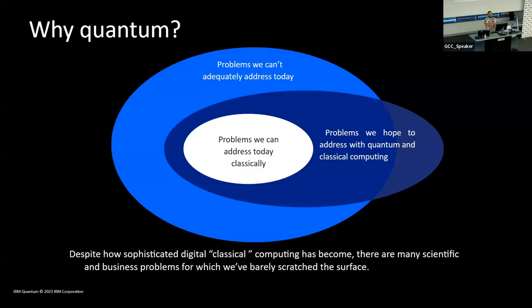So first of all, why quantum? Why are people pursuing this? Well, the fact is there's a ton of problems that we can't properly address today. There's a subset of problems we can kind of address using classical computers, but a much larger subset are problems that we could possibly address using both quantum computers and classical computers together.